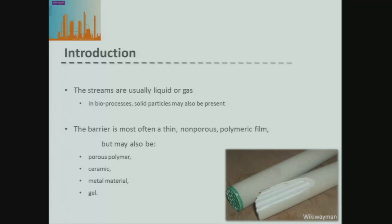Our membrane barrier is often a thin, non-porous polymeric film — a film made out of polymers — and it's generally non-porous, so the materials have to actually absorb onto the membrane surface. However, we can have a variety of different materials. Instead of non-porous polymers, we might have porous polymers, which is a polymer structure that actually has small pores or holes through which material can pass.